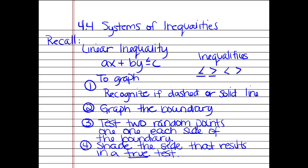Then you're going to select two random points, one from each side of the boundary, and test those points for their truthfulness. You're going to shade in the side that results in a true test.